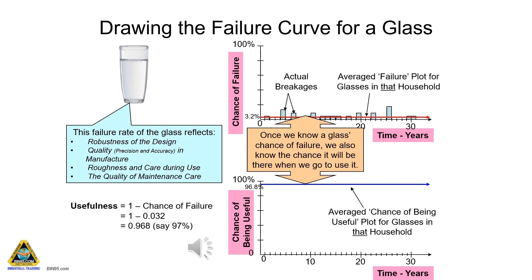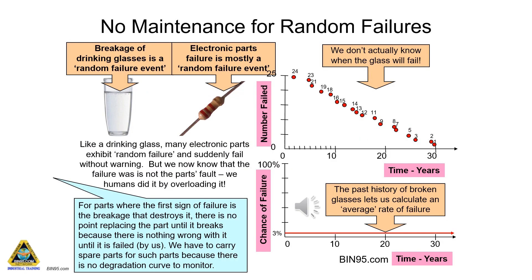A random event is one that happens from the continuous presence of numerous failure mechanisms that may or may not produce a failure. No maintenance for random failures. Like a drinking glass, many electronic parts exhibit random failure and suddenly fail without warning. But we now know that the failure is not the part's fault — we humans did it by overloading it. For parts where the first sign of failure is the breakage that destroys it, there is no point replacing the part until it breaks because there is nothing wrong with it until it has failed. We have to carry spare parts for such parts because there is no degradation curve to monitor.